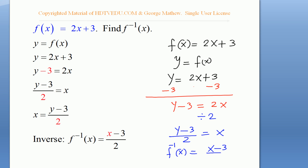So f⁻¹(x) = (x - 3)/2. Let's look at the original function: when you put x = 0 into y = 2x + 3, what do we get for y? We get 3. For the inverse function, when you substitute x = 3, what do we get back? We get 0.